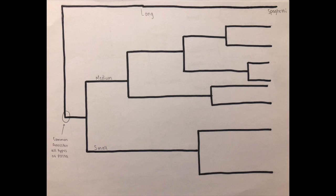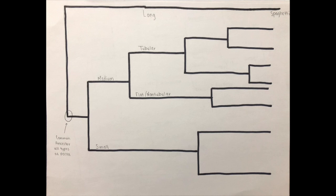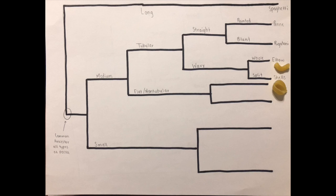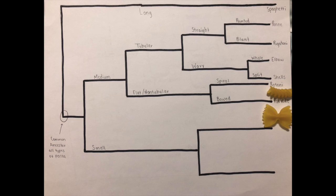From our medium branch, we diverge based on whether the pasta is tubular or flat. Tubular then branches based on the characteristics of straight or wavy. Our straight branch then diverges to give penne pasta and rigatoni. Penne is pointed where rigatoni has a blunt end. Our wavy branch gives us elbow pasta and shells. Elbow pasta is whole while shells are split.